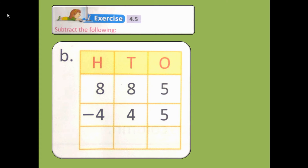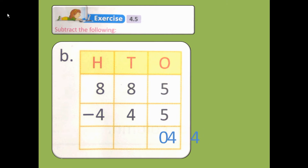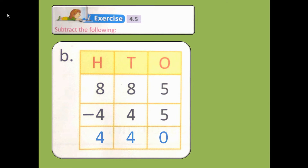Now let's subtract. We know, my dear students, when we subtract one number from the same number, the answer is 0. So 5 minus 5 is 0. Then 8 minus 4: after 4, count 5, 6, 7, 8 — how many fingers are there? 4 fingers. So 8 minus 4 is 4. Again, 8 minus 4 is 4. The answer will be 440.